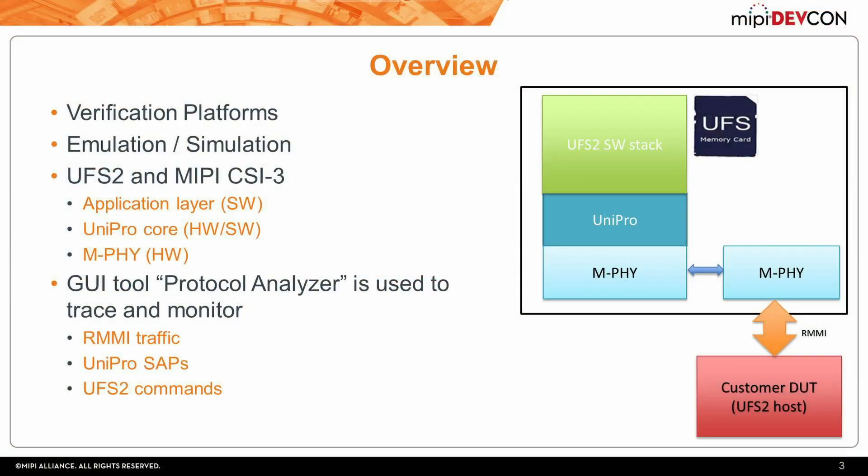The target of the platform is the creation of a verification platform for CSI 3 and UFS 2 host controllers. The end goal is to run in simulation and emulation. The platform consists of an M5 with a UniPro on top of it, with an application layer on top of the UniPro. The application layer could be UFS 2 or CSI 3.